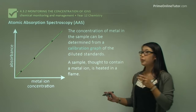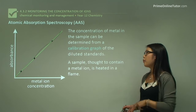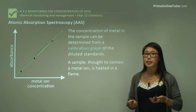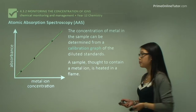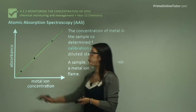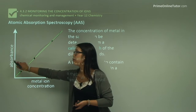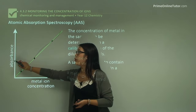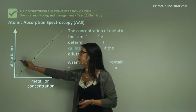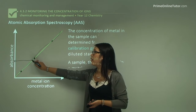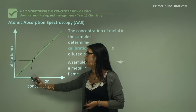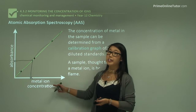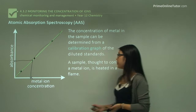When we analyze the unknown sample, we know the absorbance but not the concentration. So if we know the absorbance, we follow it across to the calibration curve, drop it down, and then read off the amount of ions in the sample.